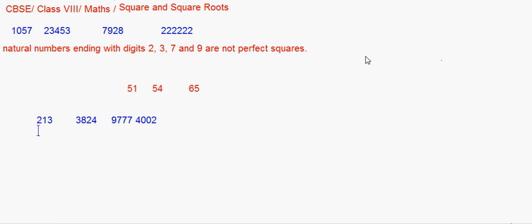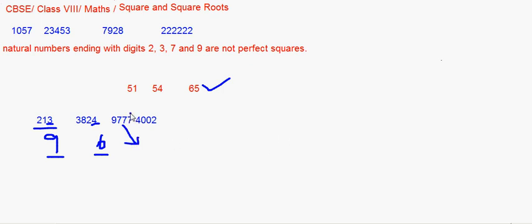A related question: will the square of a number be odd or even? For 213, the unit digit is 3; 3² = 9, so the square is odd. For 3824, unit digit 4; 4² = 16, unit digit 6 — even. For 977, unit digit 7; 7² = 49 — odd. For 4002, unit digit 2; 2² = 4 — even.